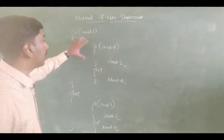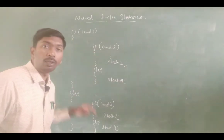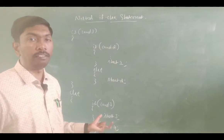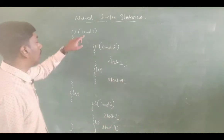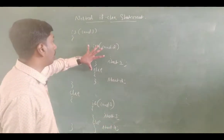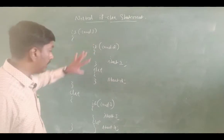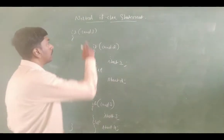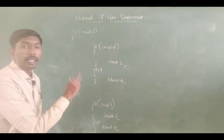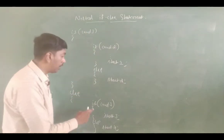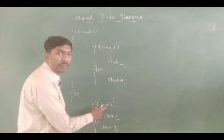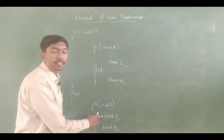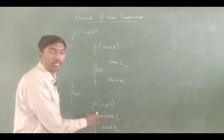An if-else contains another if-else — that is nested if-else. If condition 1 is true, control enters that block. If condition 1 is false, the else block will execute. If condition 3 is true, then statement 3 will execute.